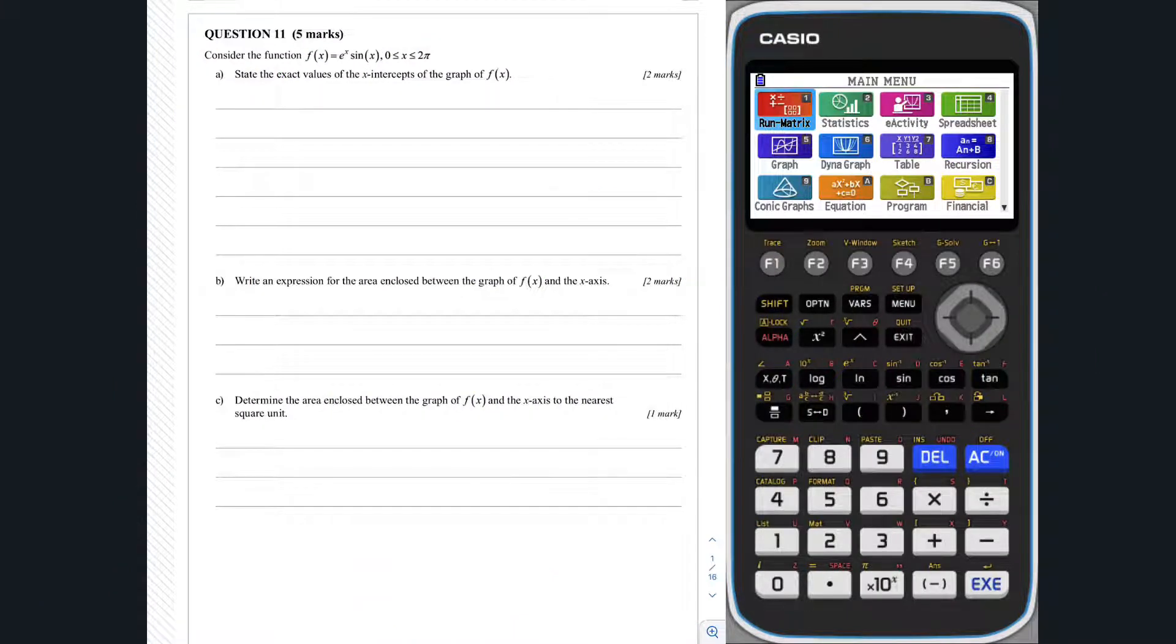Question 11, part A. To determine the exact values of the x-intercepts of the function e to the x sine x on the interval 0 to 2 pi, we need to set y, or f of x, to be 0, and solve the resulting equation for x.